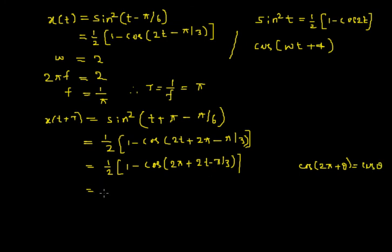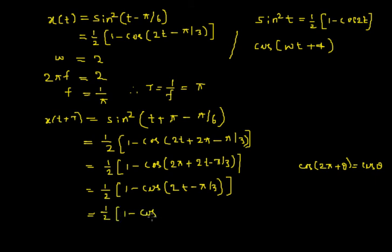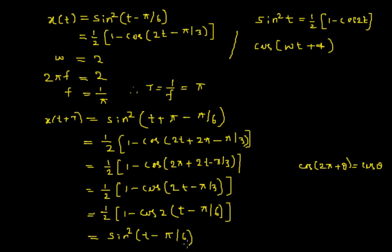Using that result, this becomes 1 by 2 into bracket 1 minus cosine of 2t minus pi by 3. Taking 2 out I am left with t minus pi by 6. By comparing this with the previous signal, I can write this as sin square of t minus pi by 6, which is equal to the original signal x(t). Therefore x(t + T) equals x(t), and the given signal is periodic with fundamental period T equal to pi.